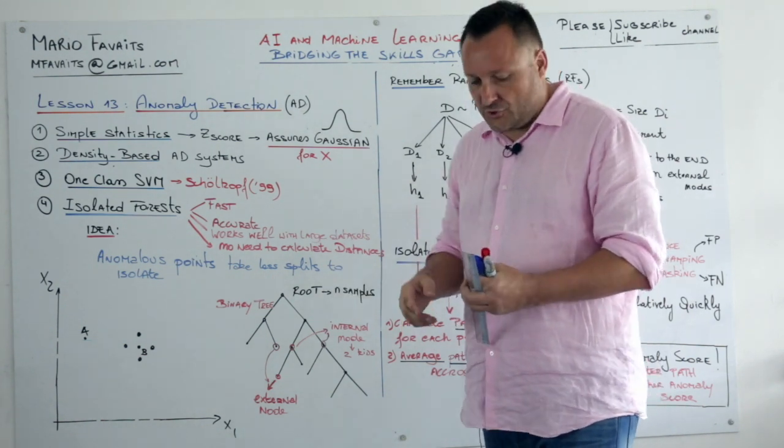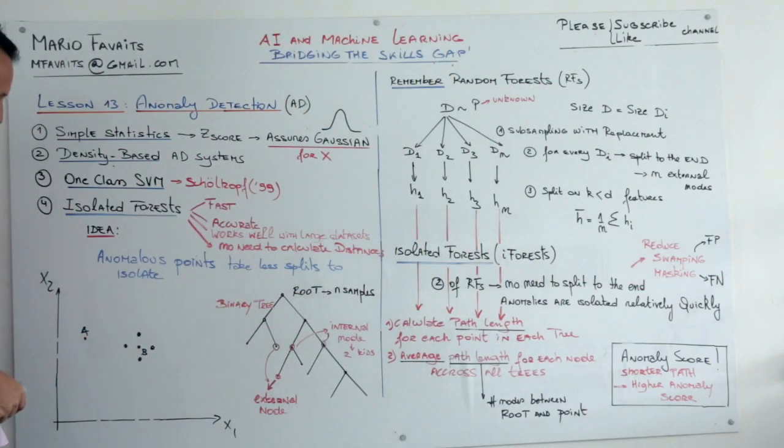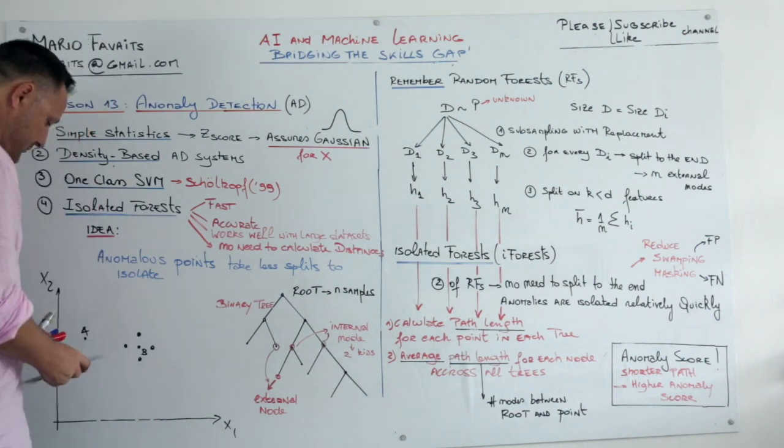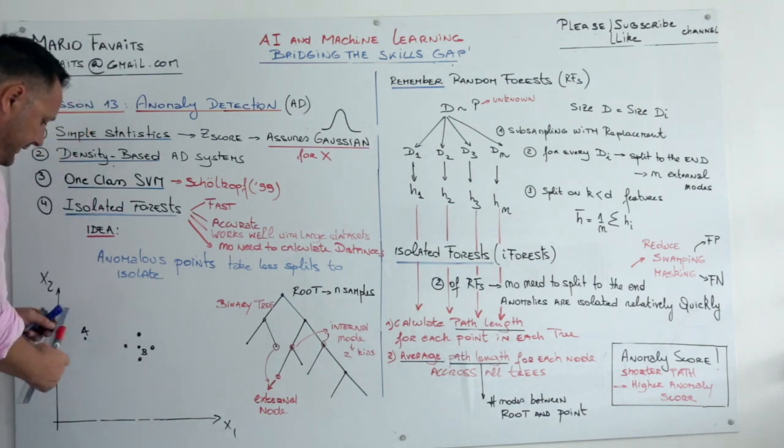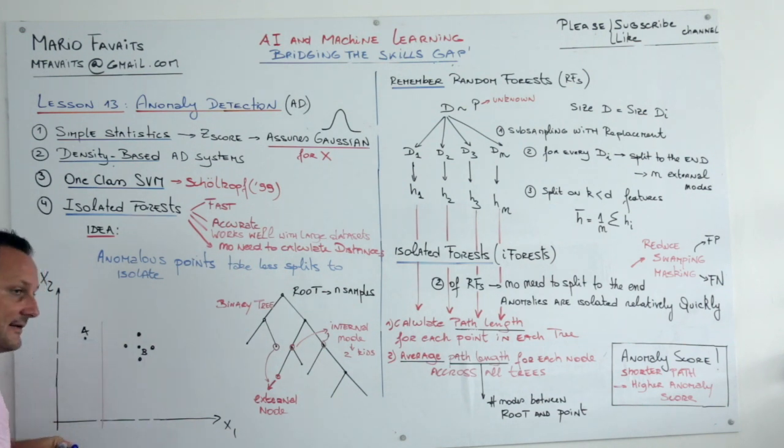To show you the basic idea, I have drawn a little grid here with two features, x1 and x2, and point A is an anomaly. And it's very clear that it is easy to isolate.